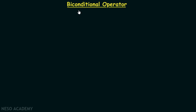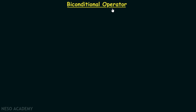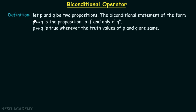This is the last lecture in the series of logical operators in propositional logic, and in this particular lecture we are going to talk about the biconditional operator. Let's consider the definition: the biconditional statement of the form P biconditional operator Q is the proposition P if and only if Q. This is the symbol we are going to use for the biconditional operator.